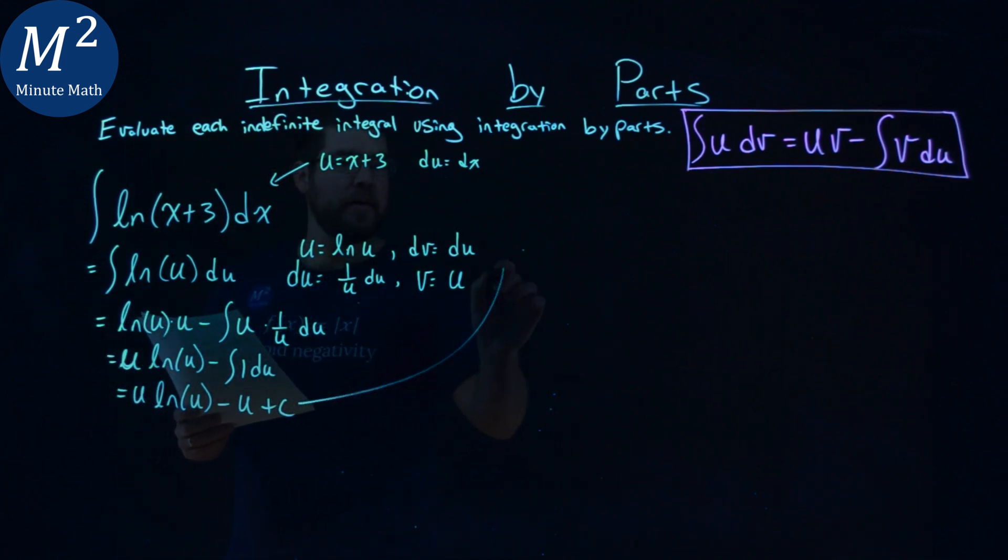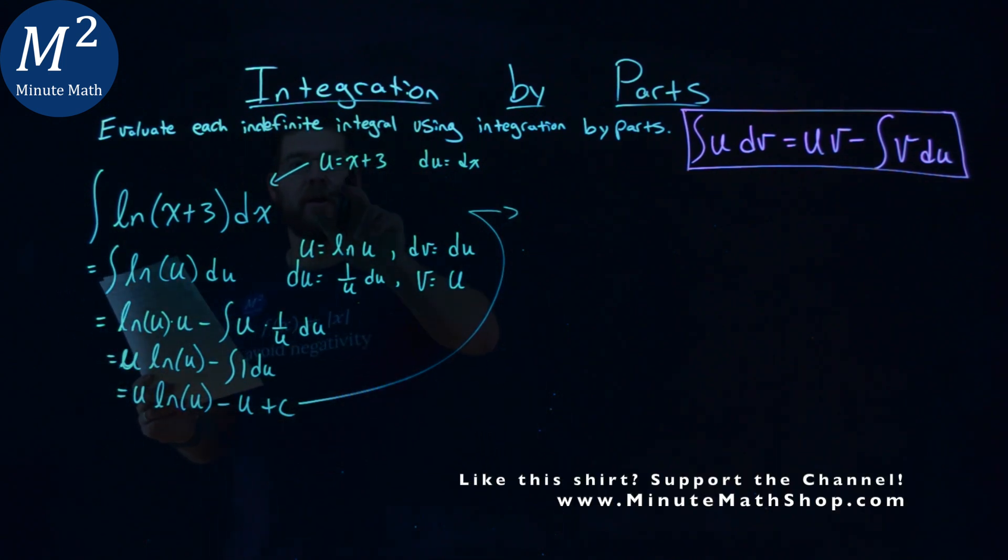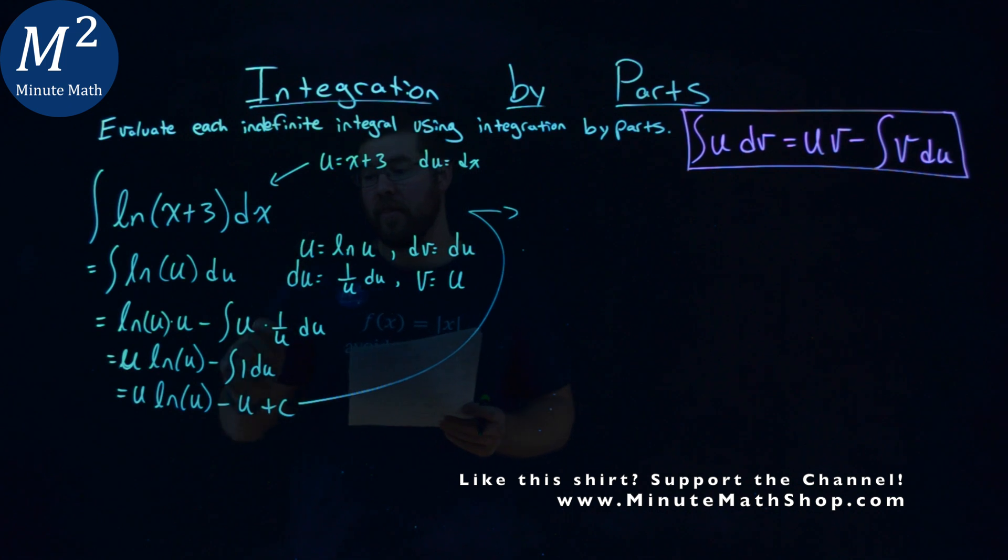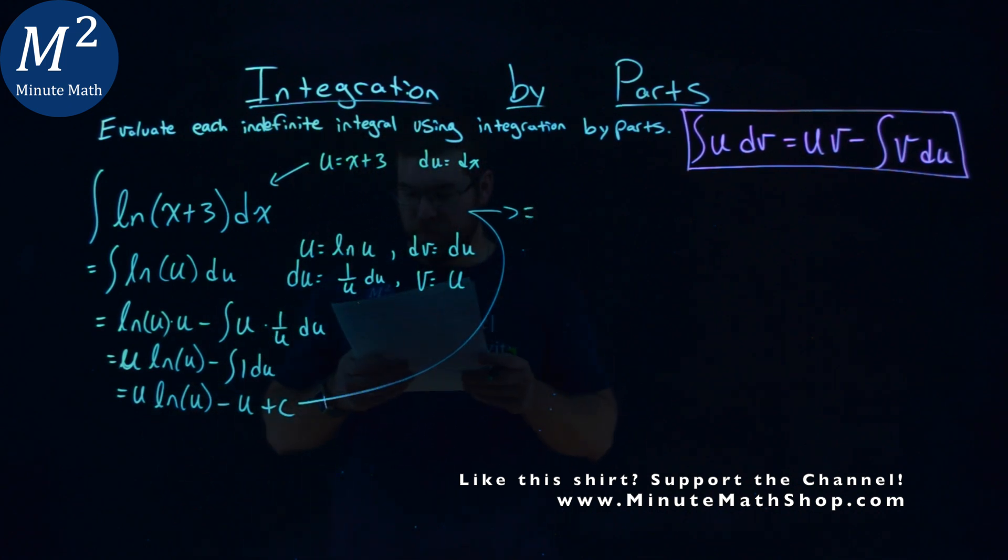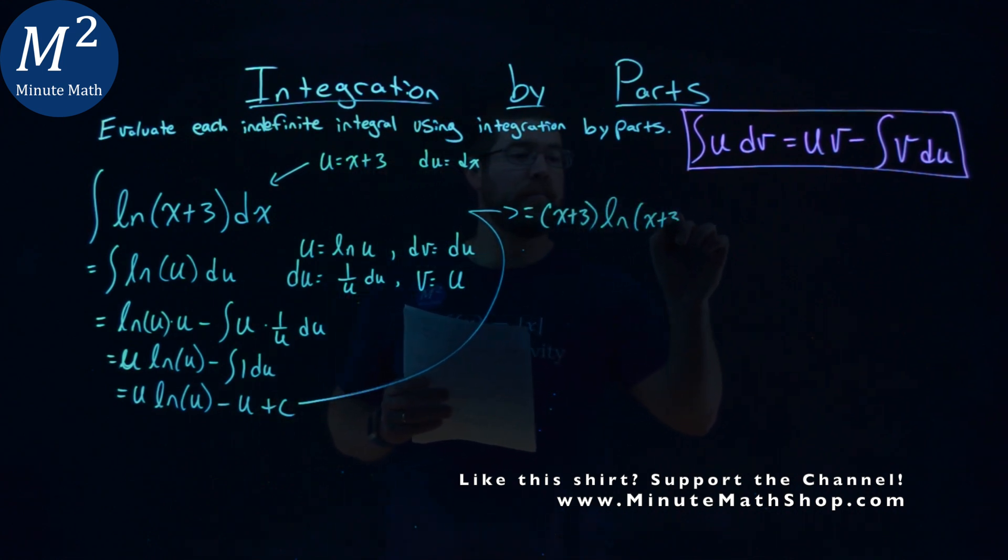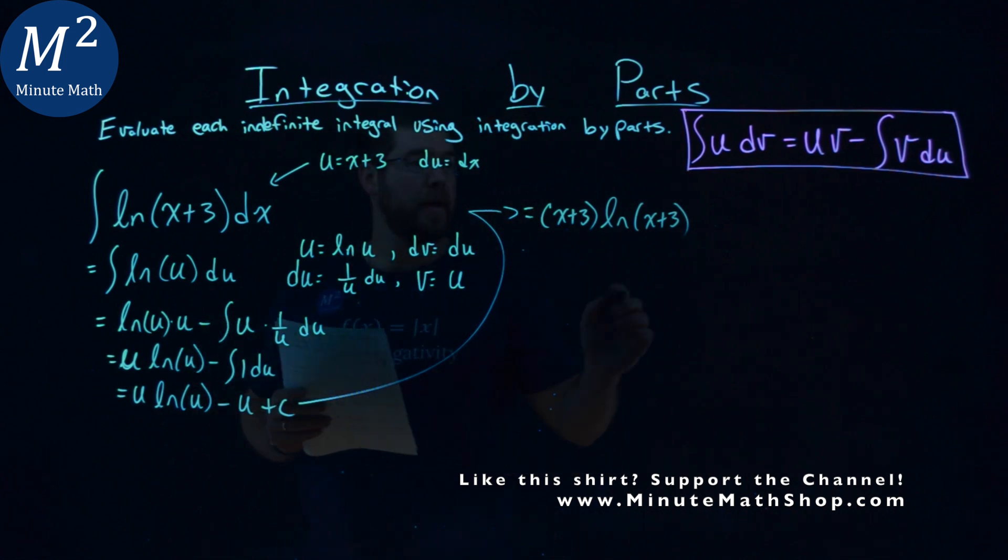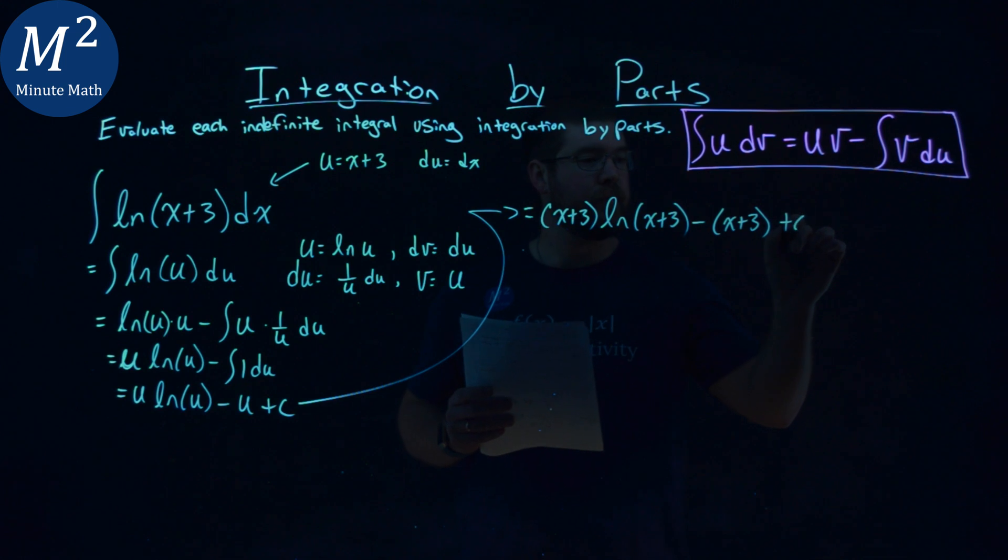So now at this point, we have the integral done, we're going to bring back our x plus 3 in for this u. So instead of u, I have an x plus 3, so I have x plus 3 here times the natural log of x plus 3, right? That second u minus x plus 3 plus c.